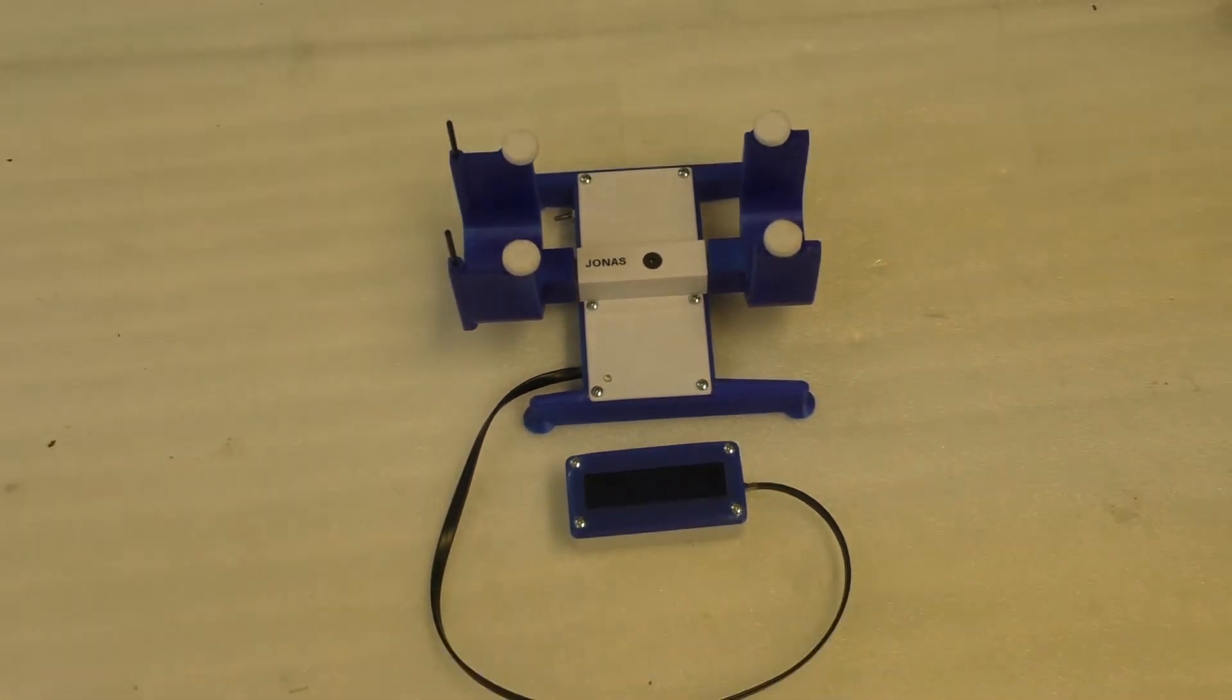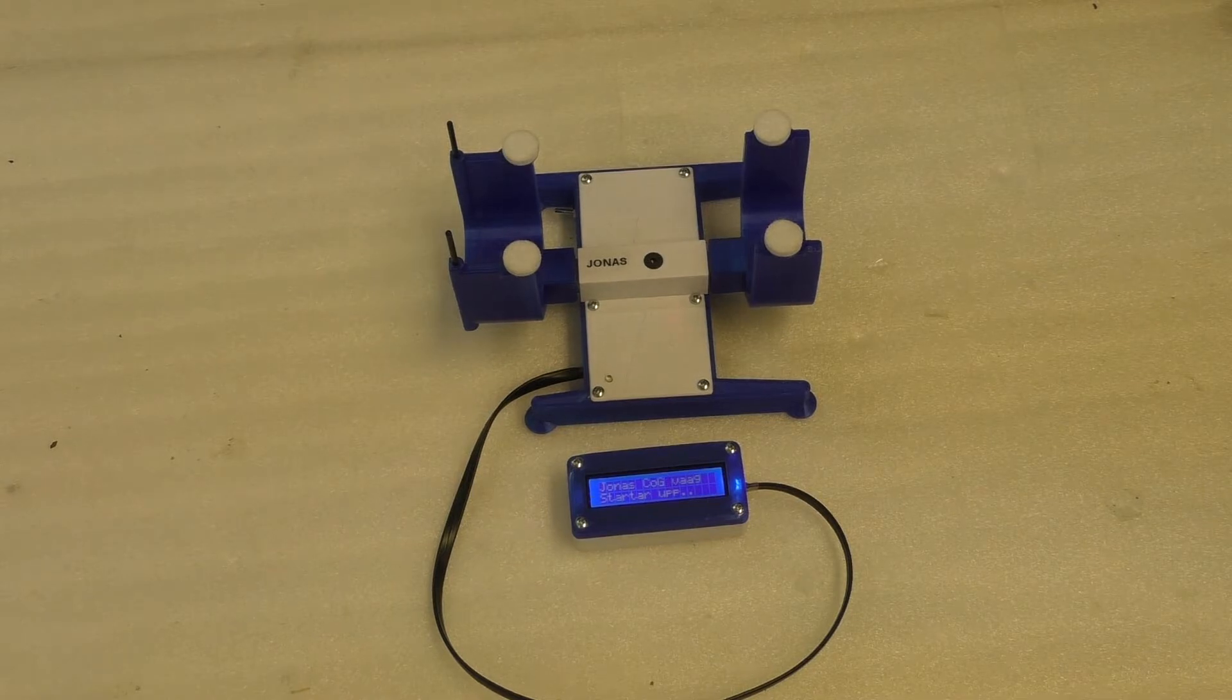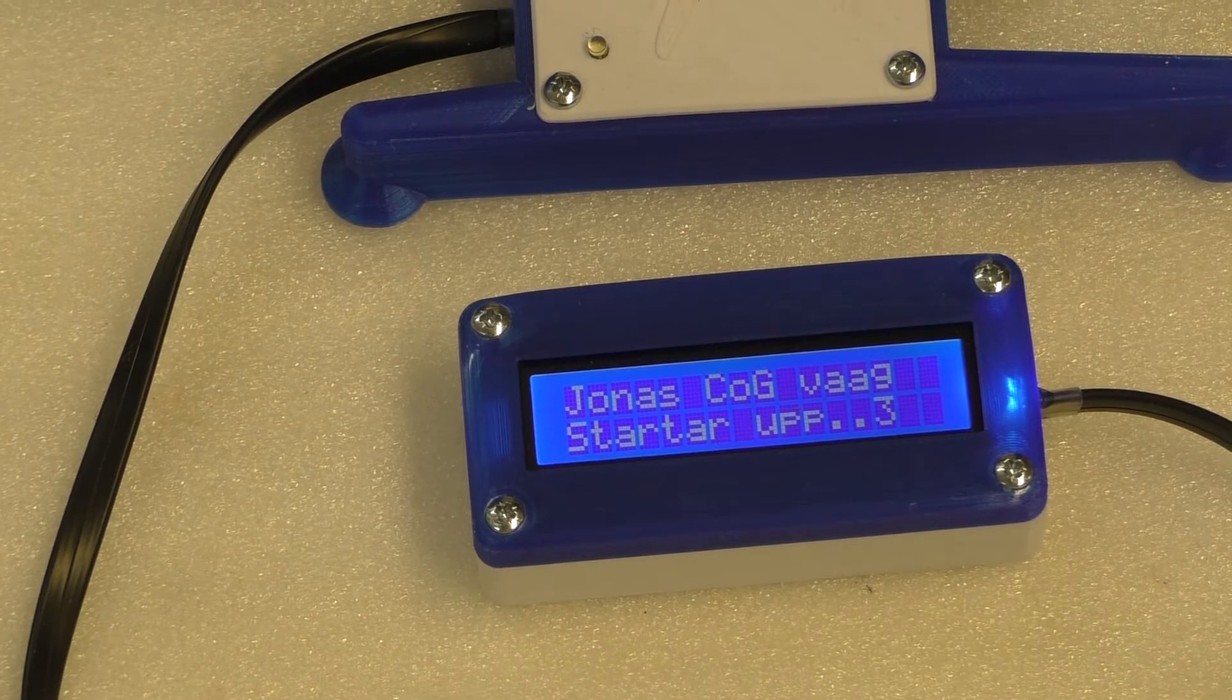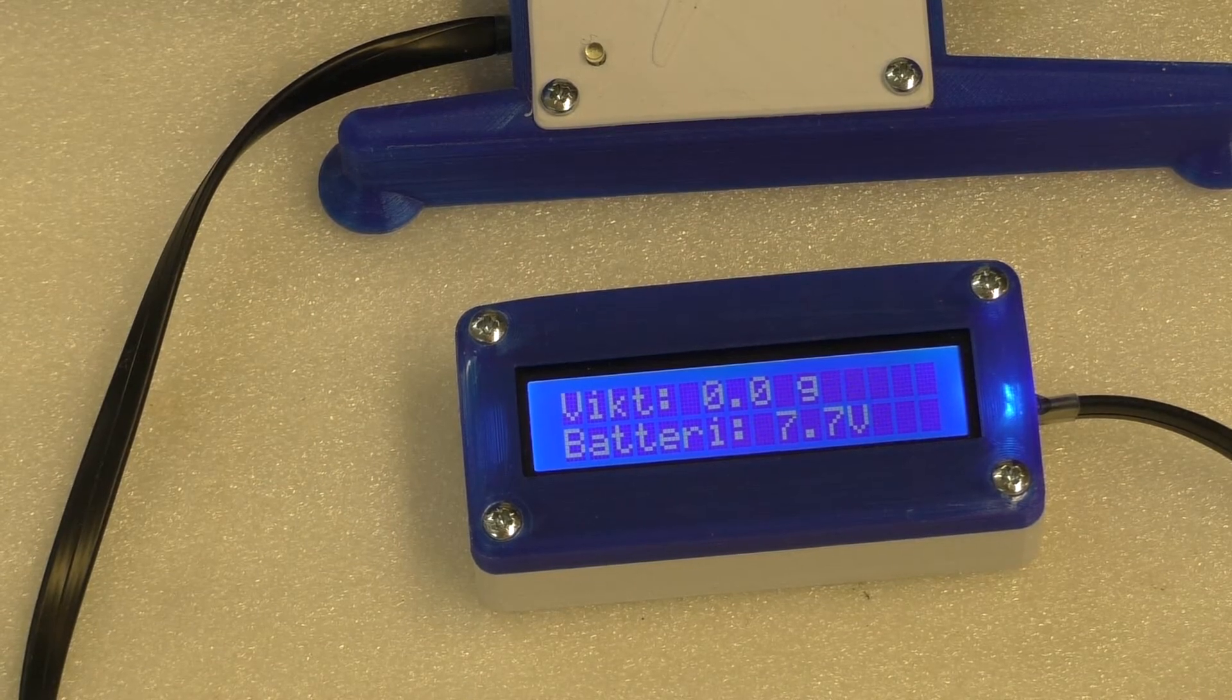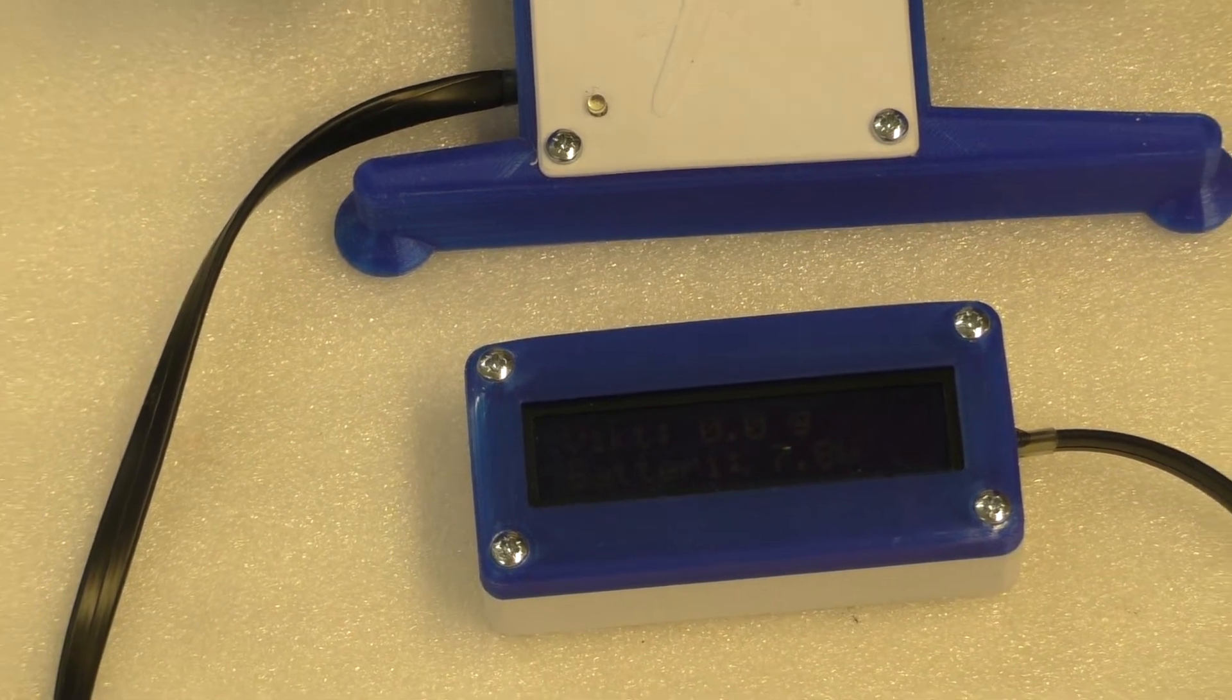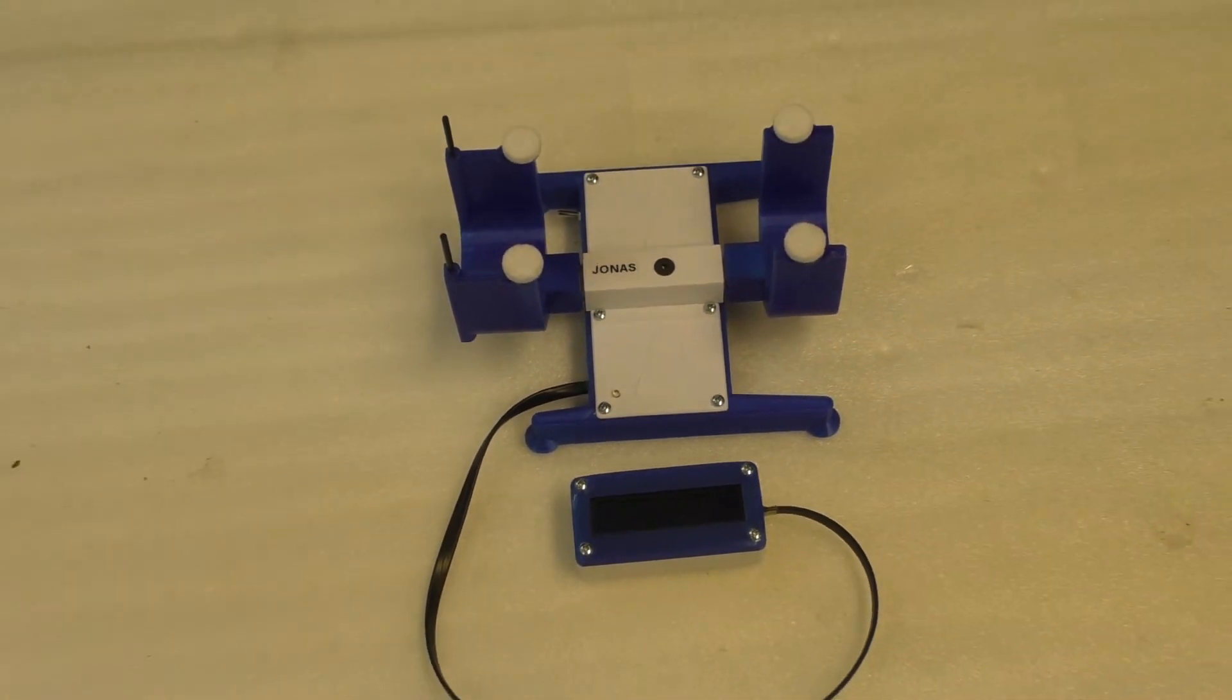A short demonstration of the COG scales, turning it on with a customized message, starting up, counting down for the calibration period. It shows 7.7 volts still left in the 9-volt battery and zero grams on the scales, cutting off the backlight very swiftly in order to save power.